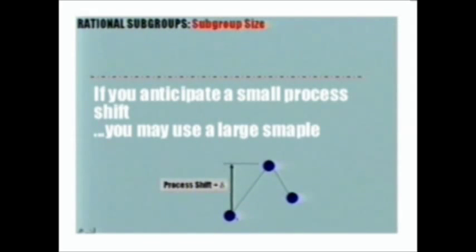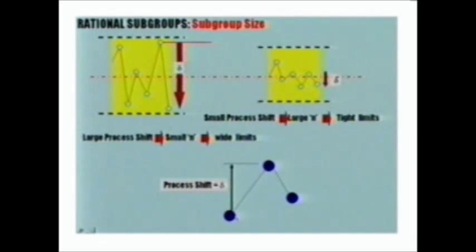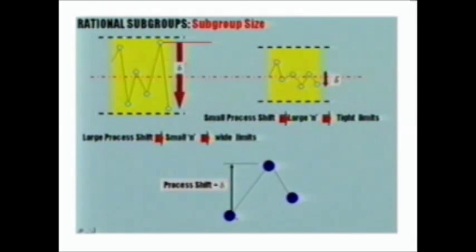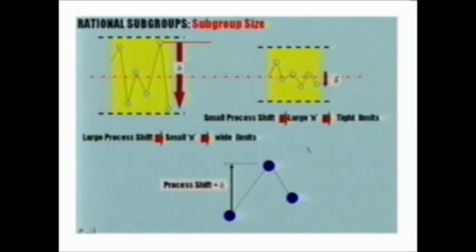This takes us to some simple rules associated with subgroup size. For a large process shift, we take a small sample — small n — because the process is going to shift dramatically anyway and the small sample will do. We understand already that a small n means wide limits. For a small process shift, the only way to detect it is to tighten the limits and use a larger sample to be truly representative of the process.